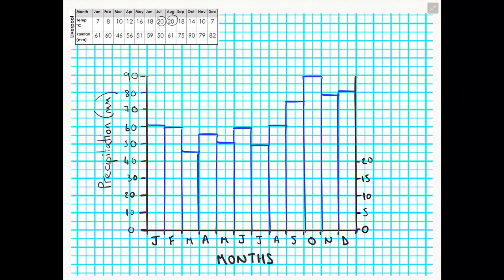I have decided to go up in intervals of 5 in this particular example, and I am remembering to label my axis so that anyone else who is looking at my climate graph understands what that right-hand axis is being used for.